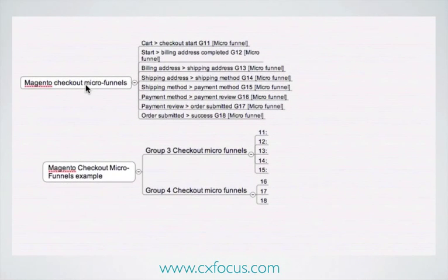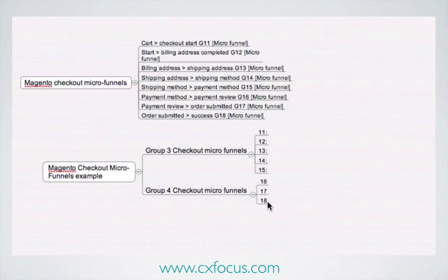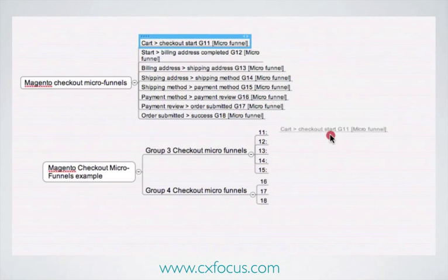In this example, I've got all the stages from a Magento one-page checkout set out, and I've got a list here of all the different slots that I've got available for goals in Google Analytics. So I can use my mind map to plan out exactly what's going where, like this.